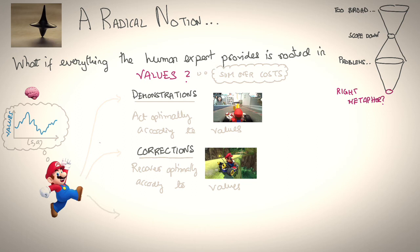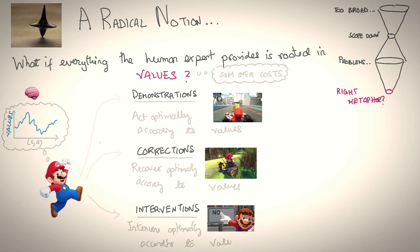Finally, Mario intervenes when things go really wrong. So, it's almost as if there's a value function in Mario's mind, and it's leaking through these various feedback modes, and we want to find a value function that's consistent with all of these inputs. That's the notion.